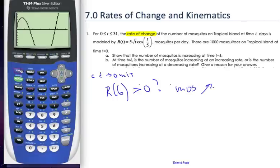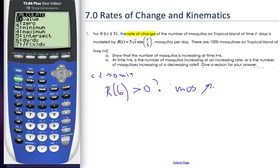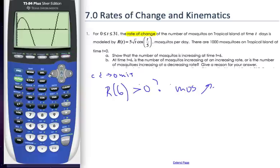So, go over to my calculator. I have the function in there already. My window is from 0 to 31, because that's my range. And I'm going to just trace the value at 6.